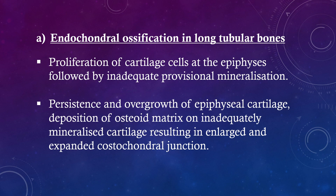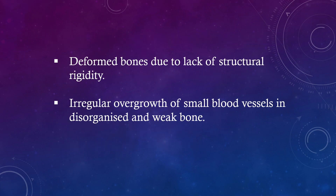Endochondral ossification in long tubular bones: Proliferation of cartilage cells at the epiphysis followed by inadequate provisional mineralization, persistence and overgrowth of epiphyseal cartilage, deposition of osteoid matrix on inadequately mineralized cartilage, resulting in enlarged and expanded costochondral junction. Deformed bones due to lack of structural rigidity. Irregular overgrowth of small blood vessels in disorganized and weak bone.